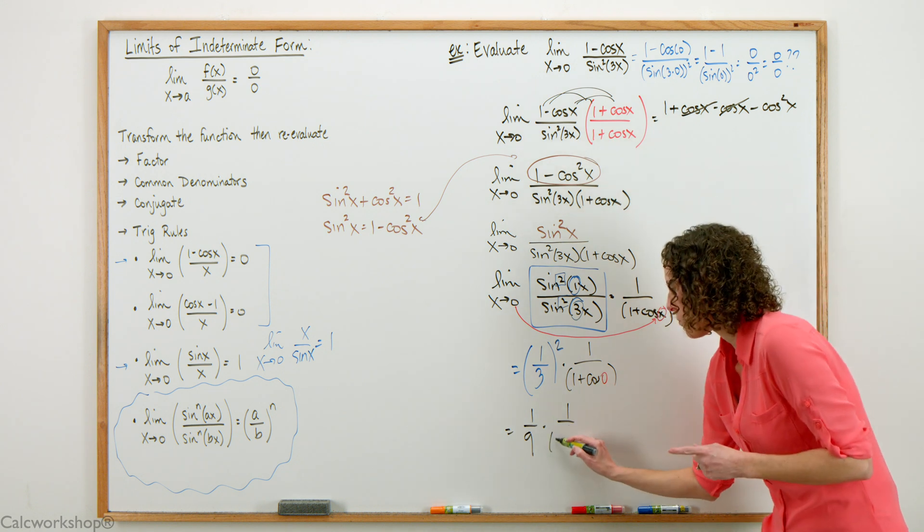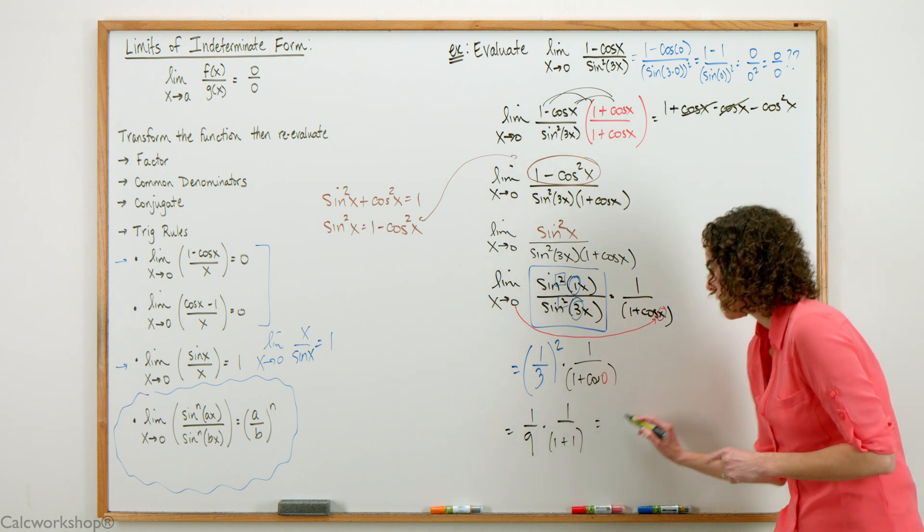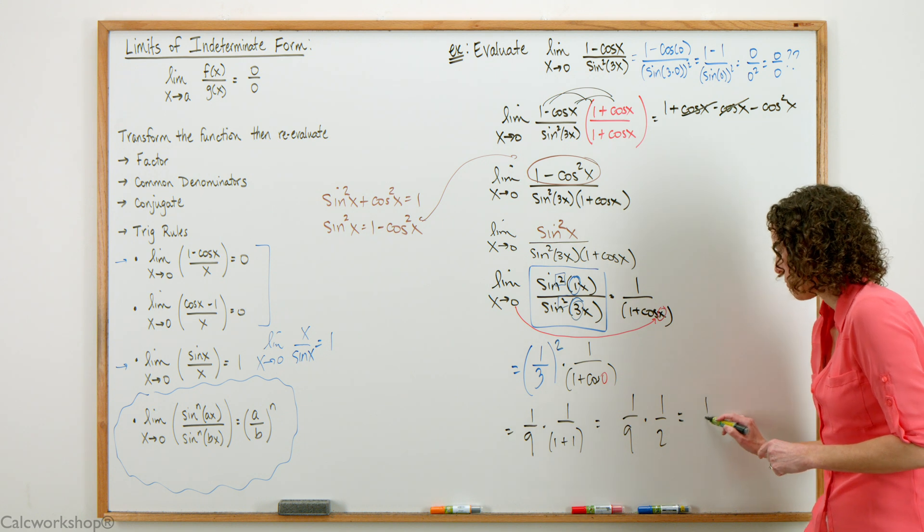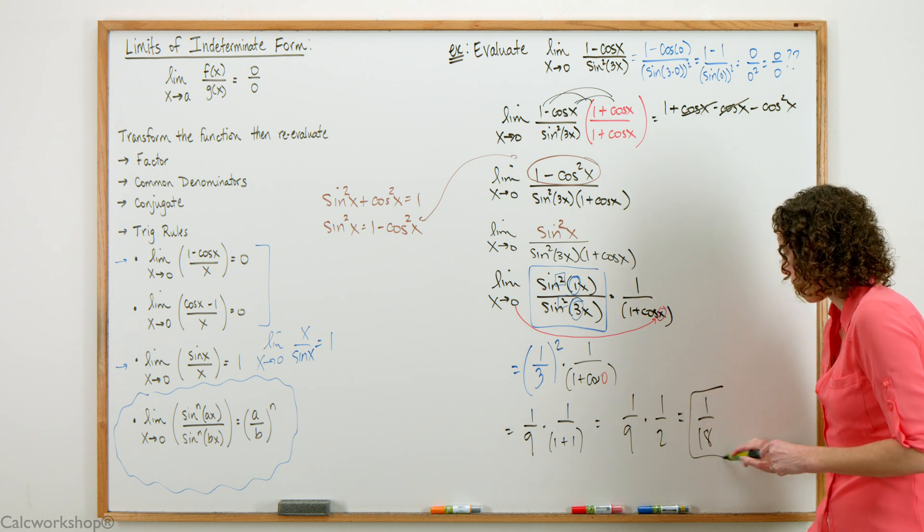1 third quantity squared is the same as 1 ninth times 1 over—the cosine of 0 is 1—so we have 1 plus 1. It's 1 ninth times 1 half, which gives us a value of 1 eighteenth.